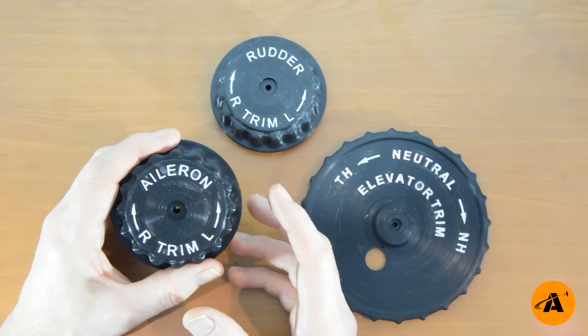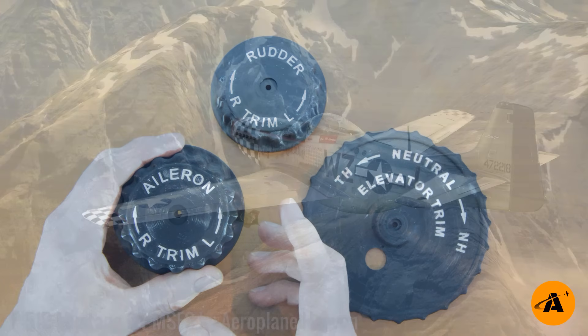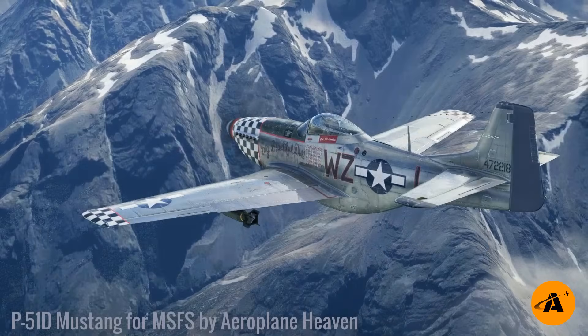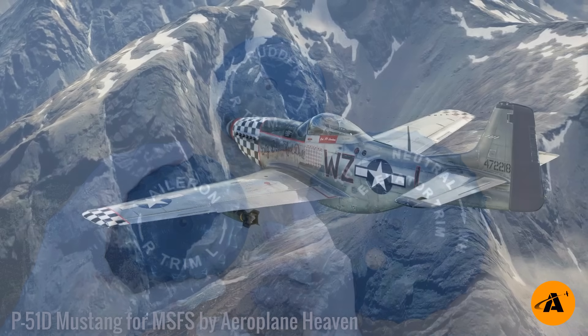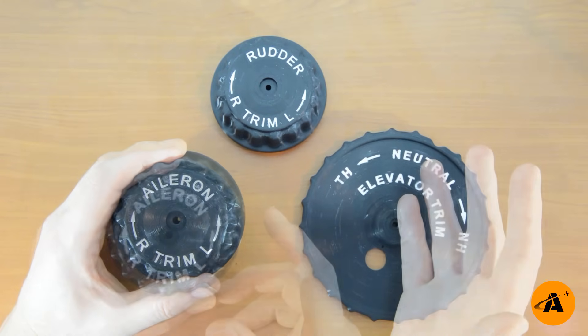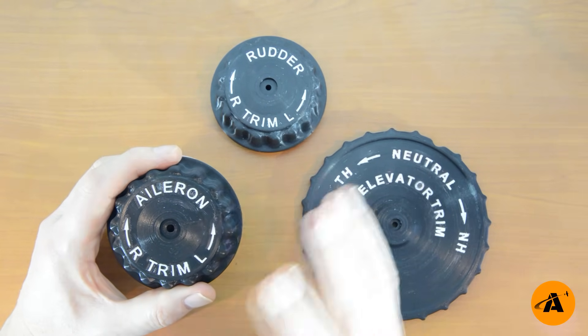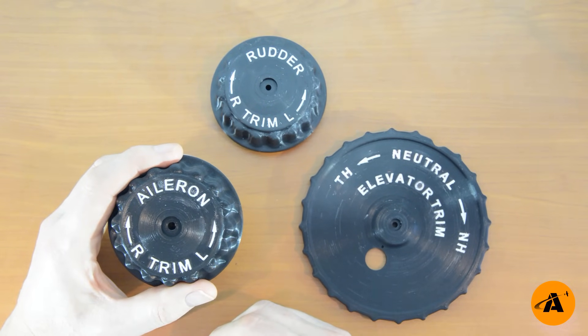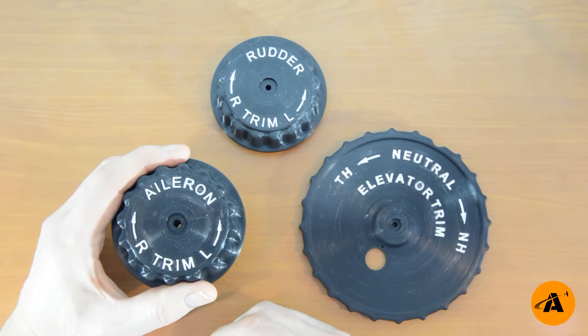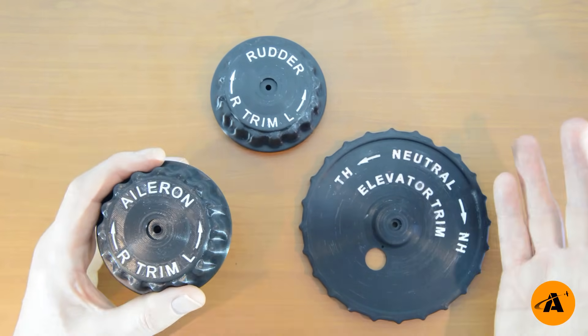One more thing before I get to the technique. If you're wondering what these trim wheels are, they're from a P51D Mustang and they're part of a fully functional set of flight controls that you can use with Microsoft Flight Simulator, DCS and any other simulator. As I said, they are 3D printed and I have to say that if you've never used a 3D printer before, these would be a great start as they're so easy to print. You could pick up a printer for a couple of hundred dollars, download the files for these wheels and in very little time you'd have these three wheels on your own desk.